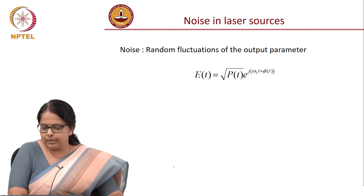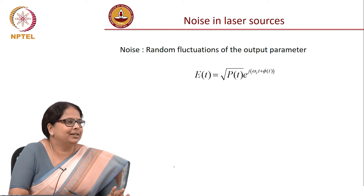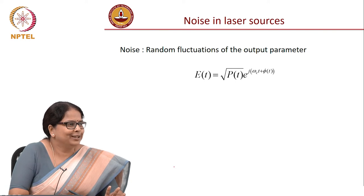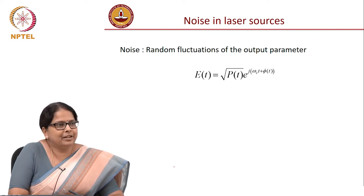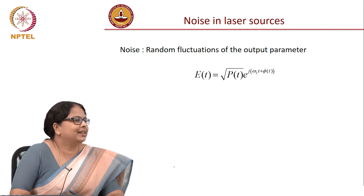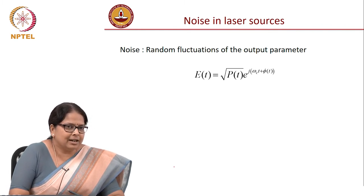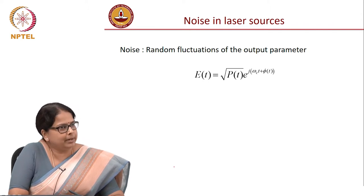The question we start asking is: what is noise? Noise is nothing but any unwanted signal. It is noise when it is random — it is unpredictable, it is random. So, noise refers to random fluctuations of the output parameter.